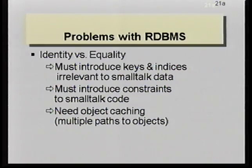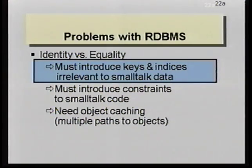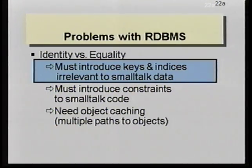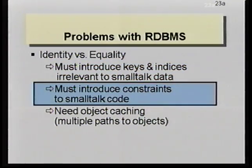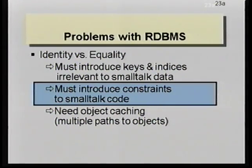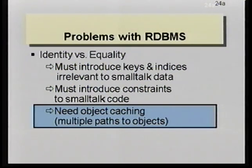For example, in trying to store this kind of data relationally, when you go to store it, you must introduce things that become primary keys in the relational tables, plus indices — not relational indices, but indices of the little nodes within the collection that form the graph, so that you know how to rewire it back together. You must introduce additional data that's completely irrelevant to the Smalltalk aspect of the application. Another issue is that you wind up introducing constraints in the Smalltalk code that are also irrelevant. For example, in order to write nodes to the database and then reread them, I wound up using an ordered collection to store the nodes so that I had unique indices, whereas the Smalltalk application before that had stored them in a set.